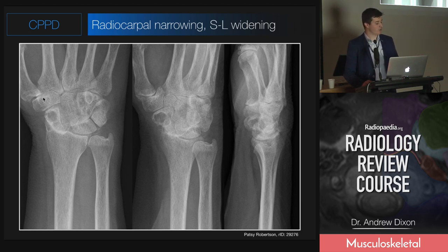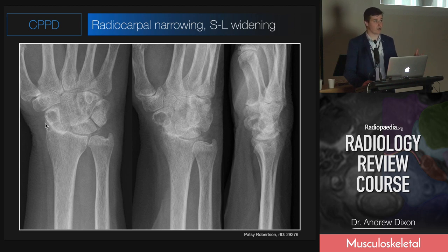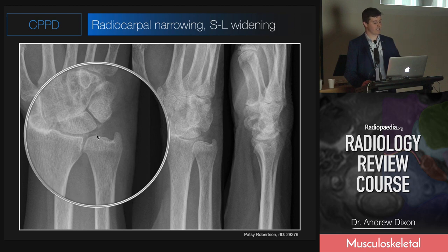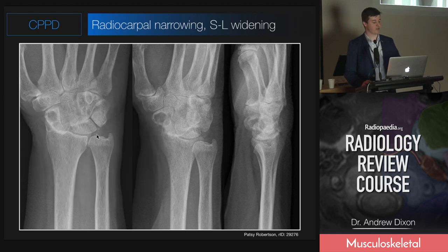The most common spot for osteoarthritis at the wrist is usually the first carpometacarpal joint, and you can see that looks normal here. So this is atypical for standard osteoarthritis - an unusual joint associated with calcification of the triangular fibrocartilage is almost certainly CPPD-related.